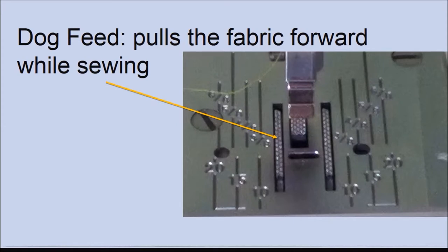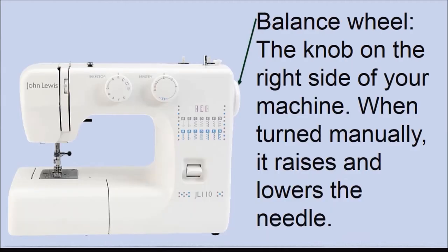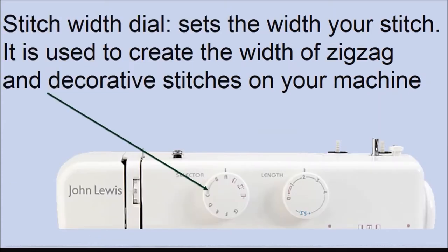Dog feed — the dog feed pulls the fabric forward while sewing, thereby feeding the fabric into the sewing machine. The spool pin holds the spool of thread in order to feed the thread into the eye of the needle, also known as the top thread. The balance wheel — this is the knob you will use to drive your machine manually. Turn the balance wheel towards yourself and you can see the needle goes up and down.